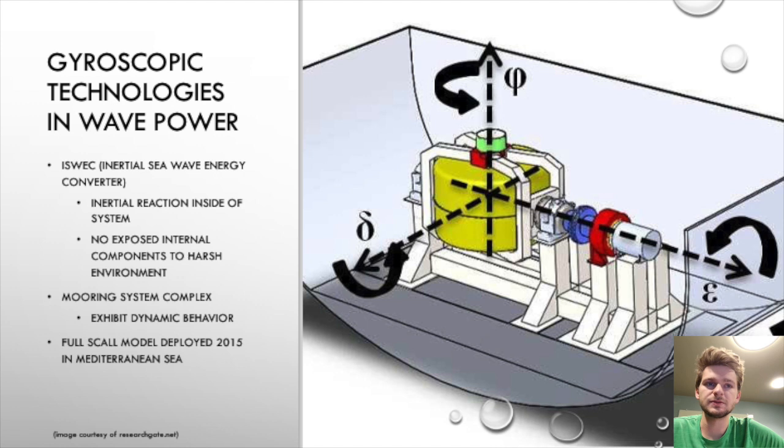We'll now move on to one of the most interesting and new systems, which is gyroscopic technology. The best thing about this one is that all the mechanical components are concealed within this enclosure, so nothing is really exposed to the harsh oceanic environment, which could be corrosive because of the salt content. This specific one is called the Inertial Sea Wave Energy Converter, and a full-scale model of this one was deployed back in 2015 in the Mediterranean Sea.